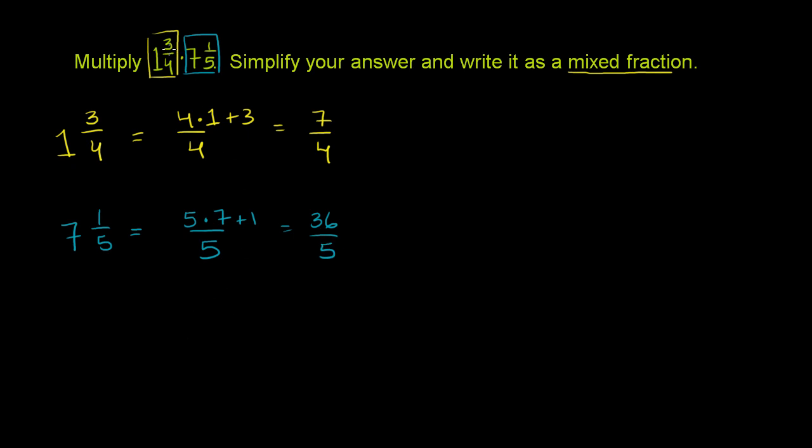So this product is the exact same thing. It's taking the product of 7/4 times 36/5. And we could multiply it out right now. Take the 7 times 36 as our new numerator. 4 times 5 is our new denominator. But that'll give us large numbers. I can't multiply 7 and 36 in my head, or I can't do it too easily.